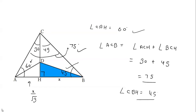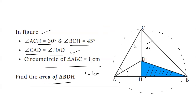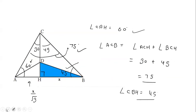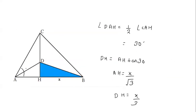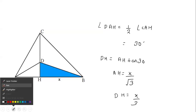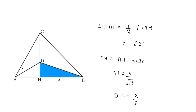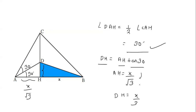In the problem it is also given that angle CAD is equal to angle CBD. So this angle equals this angle. We know the whole angle A is 60 degrees, so if both parts are equal, each will be 30 degrees. We can find DH because AH = X/√3, so DH = AH × tan 30 = (X/√3) × (1/√3) = X/3.